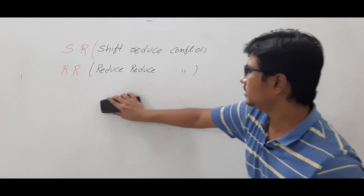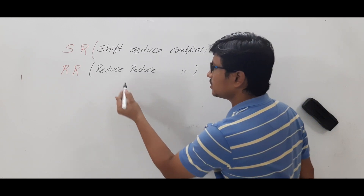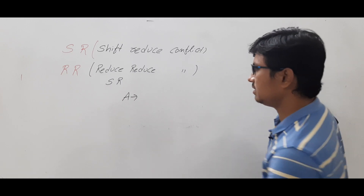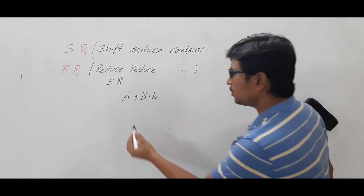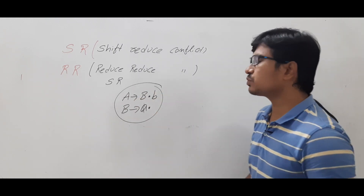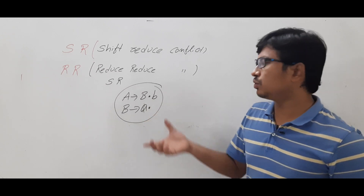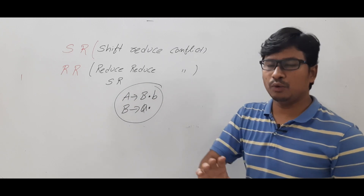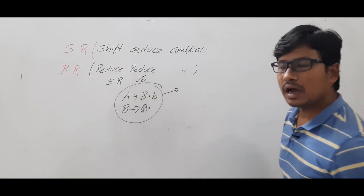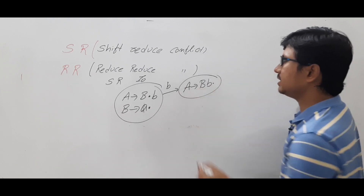Now, what is meant by an item? In the last video, we wrote I0, I1, I2 — those are the items. Let me discuss the SR conflict. For shift-reduce conflict, consider an item where you have A → B·B and B → A· (dot at the end). The first is a shift operation and the second is a reduce operation — this is called an SR conflict. As an example, let's say this is I0, and on input b, I0 goes to a new state.